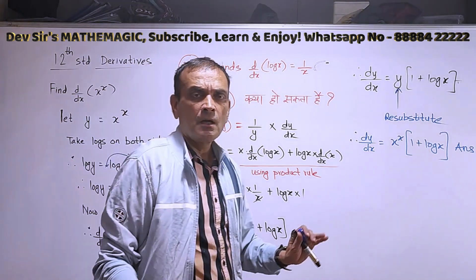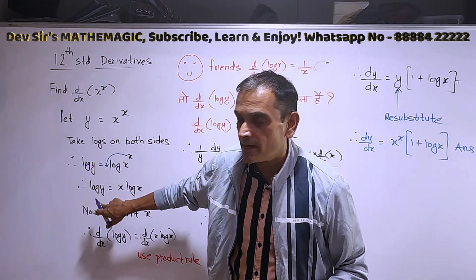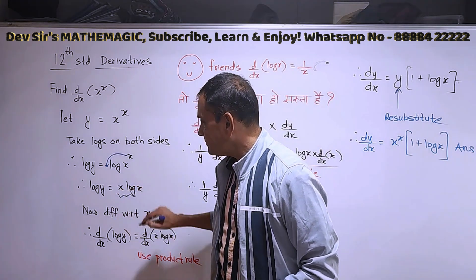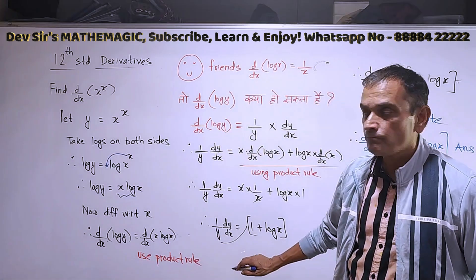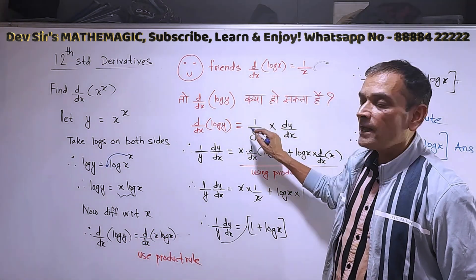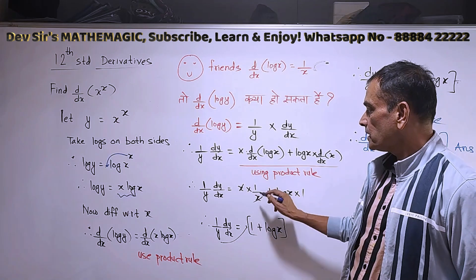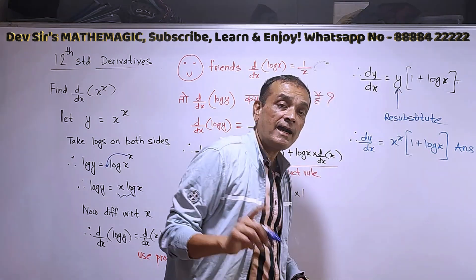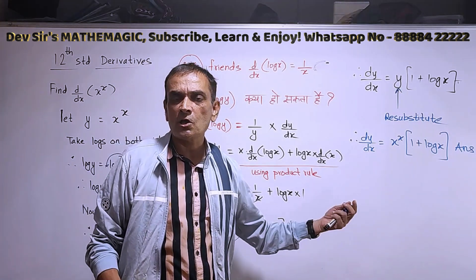Let us recap: x raised to x means logarithmic differentiation. Logarithmic differentiation means take logs on both sides. After taking logs on both sides, use rules of logs to get x log x. After using rules of logs, differentiate with respect to x — that means d by dx on both sides. From d by dx of x into log x, apply the product rule. One new formula seen today: derivative of log y is not only 1 upon y, but 1 upon y into dy by dx. So 1 upon y dy by dx equals 1 plus log x. Final step: transfer the value of y to the RHS and substitute y equals x raised to x.